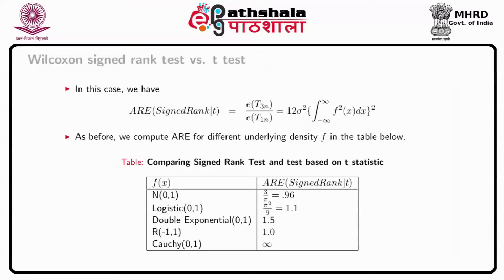This shows that the t-statistic based test is no longer preferred for the double exponential distribution. We note that within the class of all continuous unimodal symmetric densities, the ARE of sign test relative to t cannot be lower than one-third. One can consult the book by Hodges and Lehmann for details. From the above table, the only distribution attaining the lower bound is the rectangular(minus 1 to plus 1) distribution.